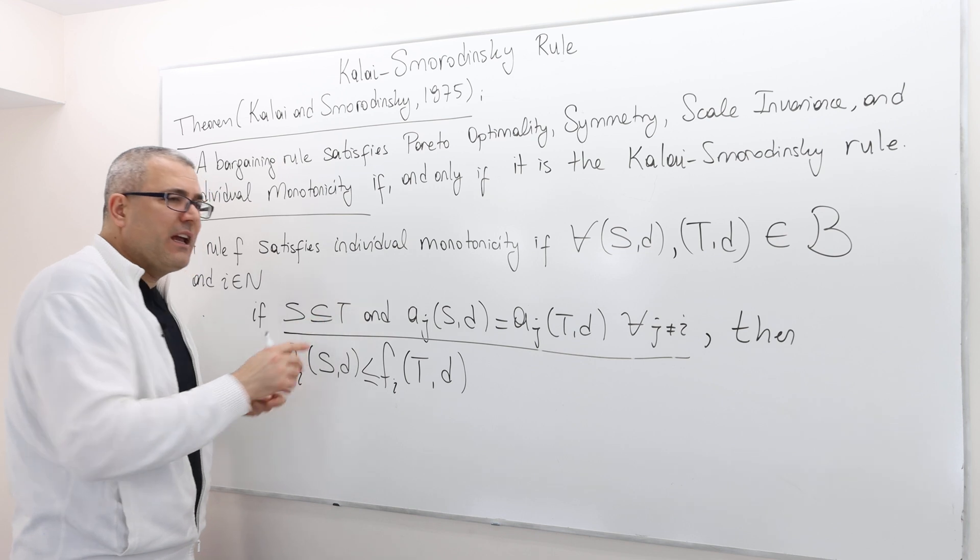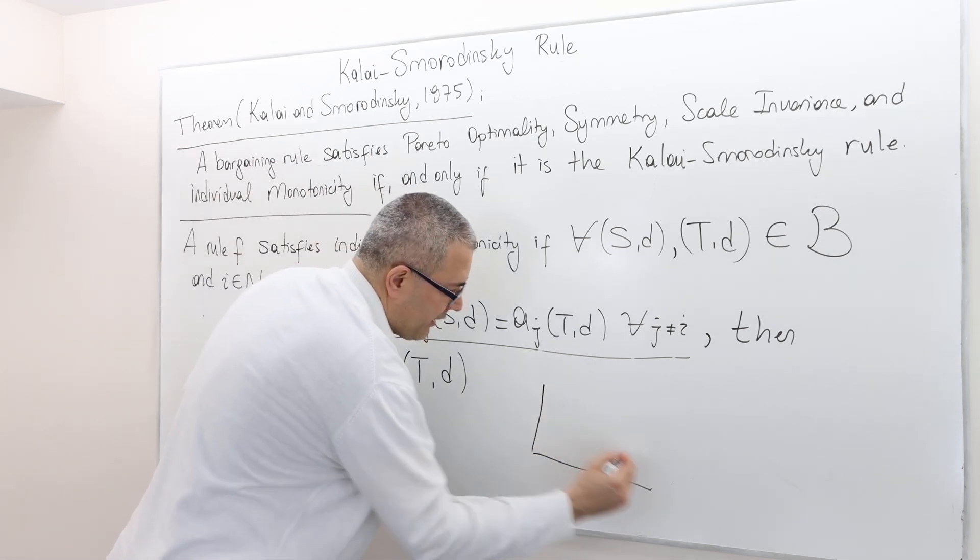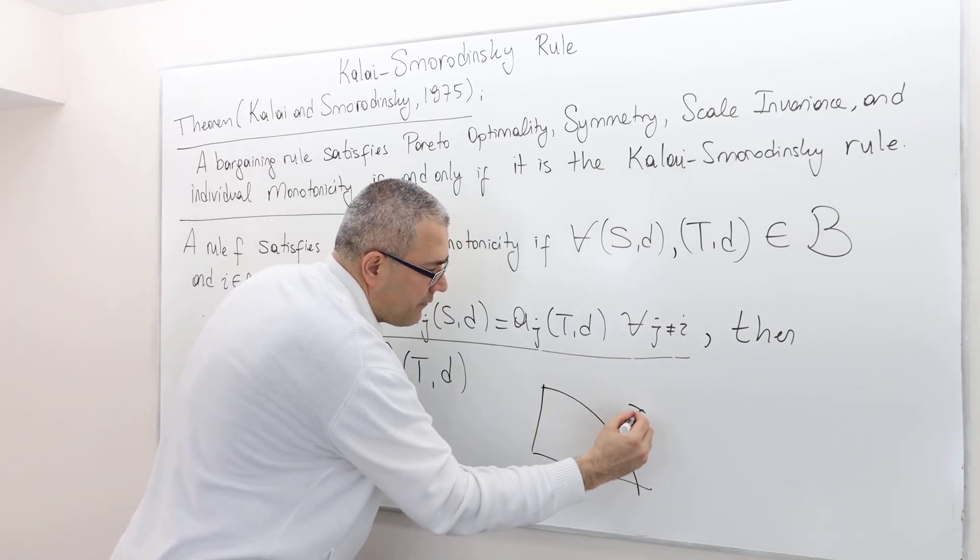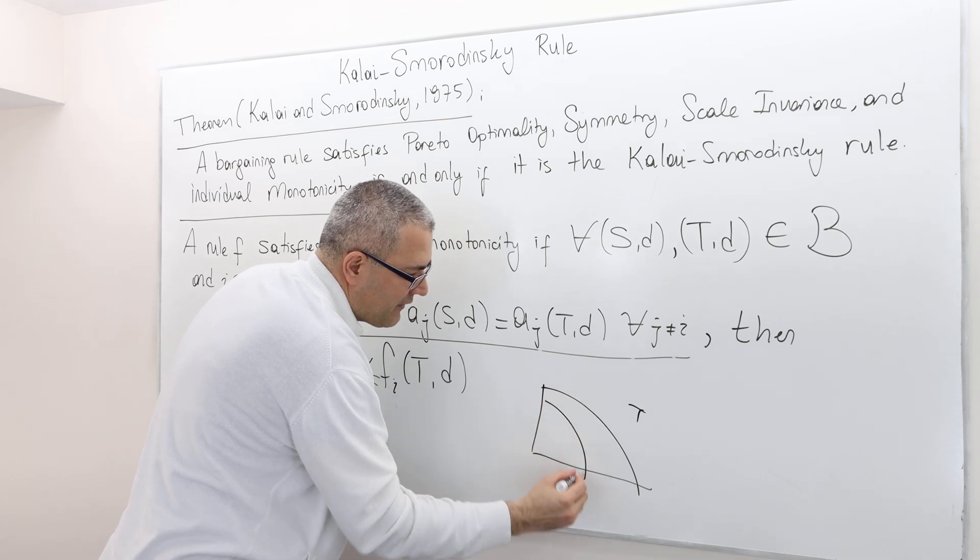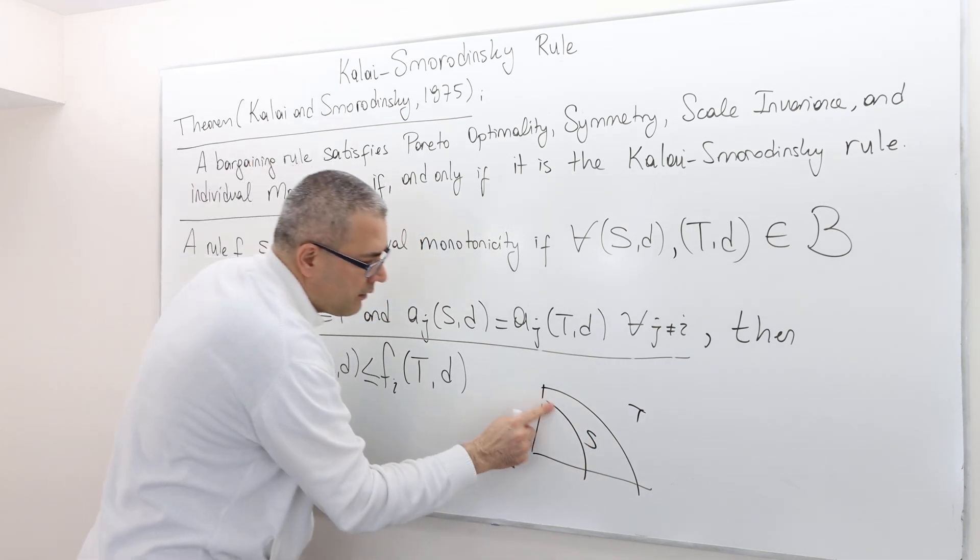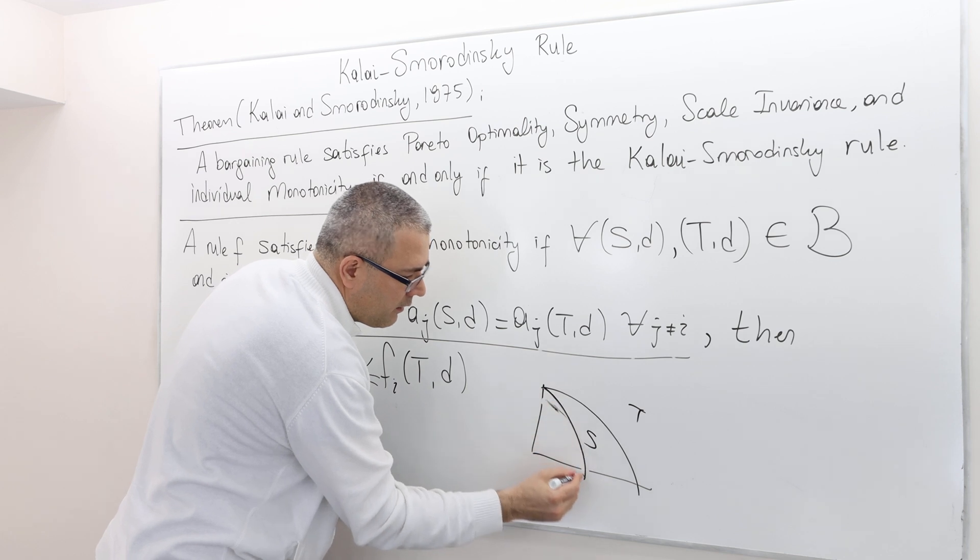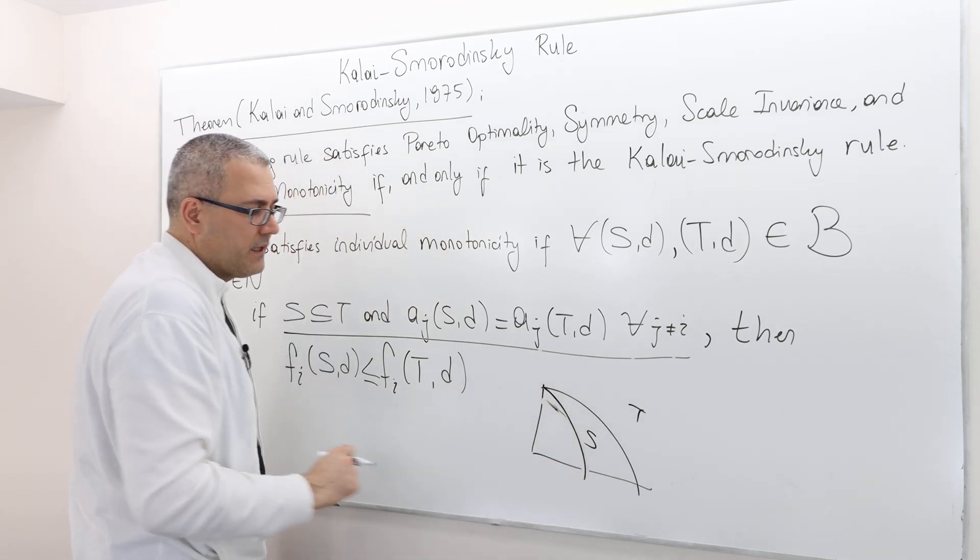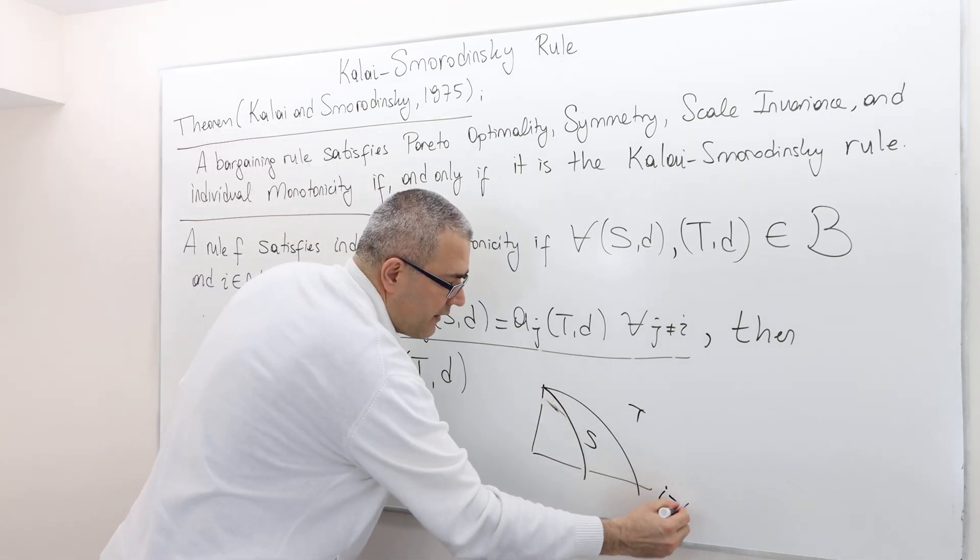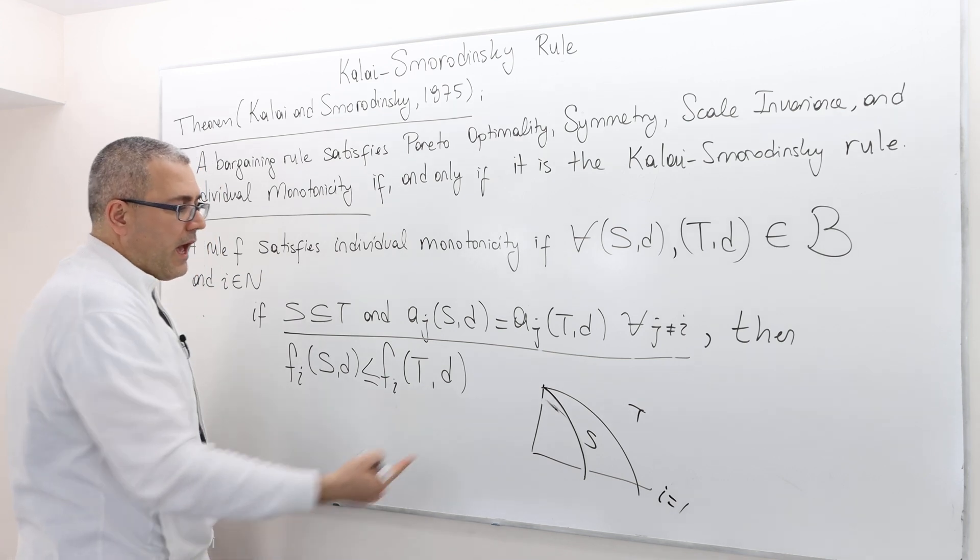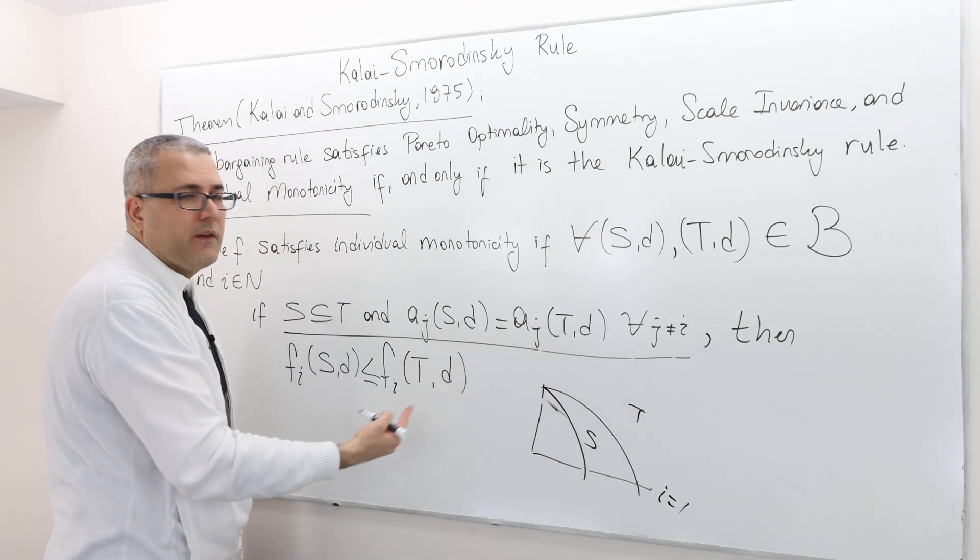Remember, T is a, so geometrically, this is like T, and this is what S is. All right? Well, okay, let's suppose this is S. So player I is, in this case, player one. And player two has exactly the same aspiration point.